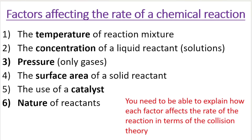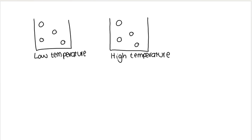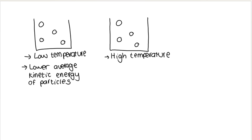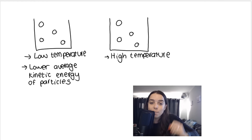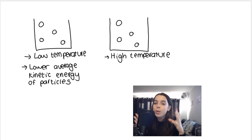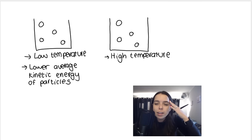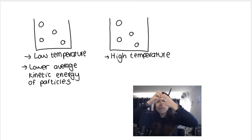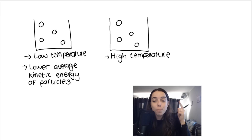My first factor is the temperature of the reaction mixture. If we have an identical situation — same containers, same type of substance, same number of particles, same concentration — but one is at a lower temperature and one is at a higher temperature, what changes fundamentally is the average kinetic energy of the particles. Lower temperature means lower average kinetic energy, so the molecules move slower, there are fewer collisions, and therefore fewer effective collisions per unit time.